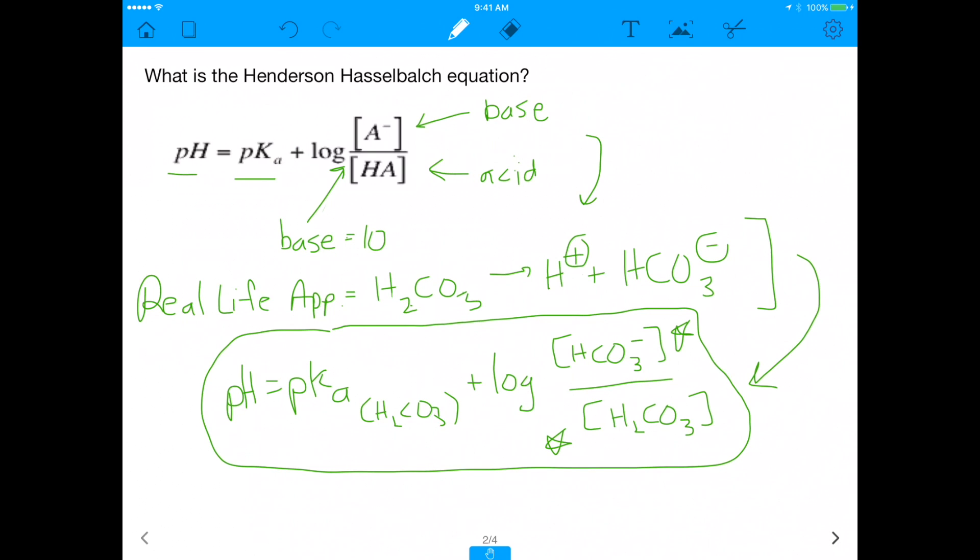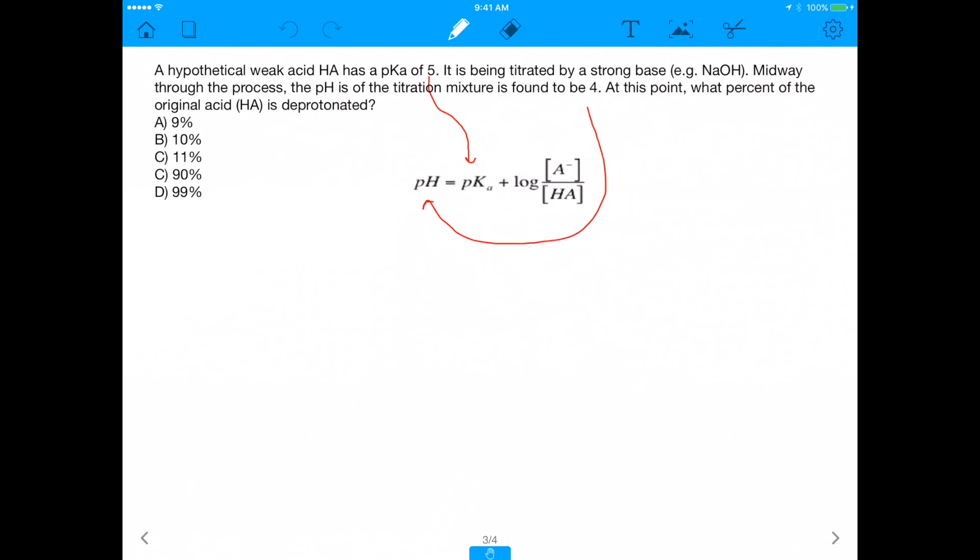It says a hypothetical weak acid, HA, has a pKa of 5. So we're going to take that pKa, and we're going to plug it in into that pKa section of the equation. And then we know it's being titrated by a strong base. Midway through the process, the pH of the titration is found to be 4. And you're going to take that 4, and as the arrow shows, you're going to plug into the pH section.